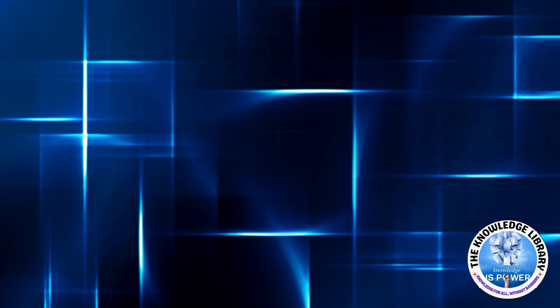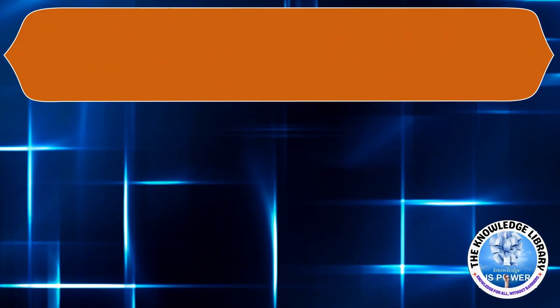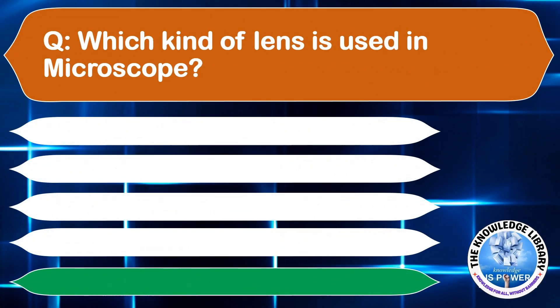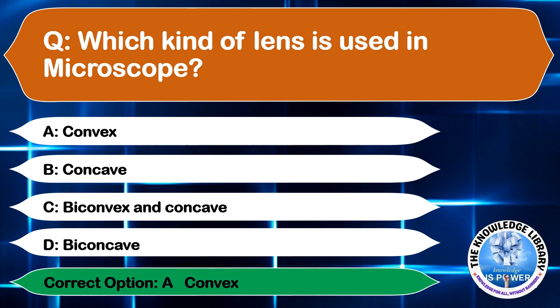Which kind of lens is used in microscope? A: Convex, B: Concave. The correct answer is option A, Convex.